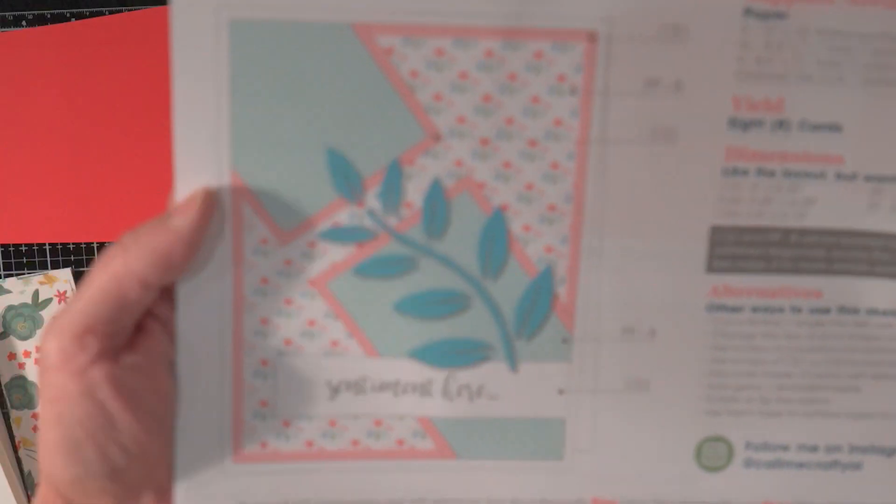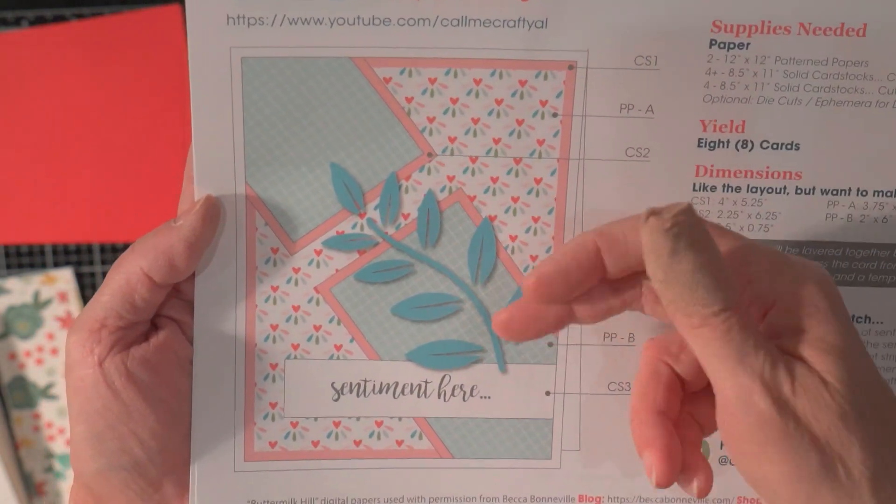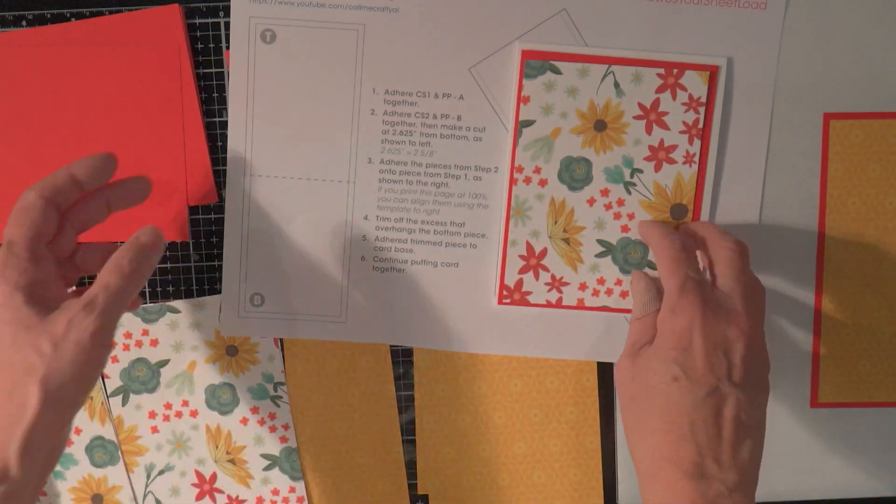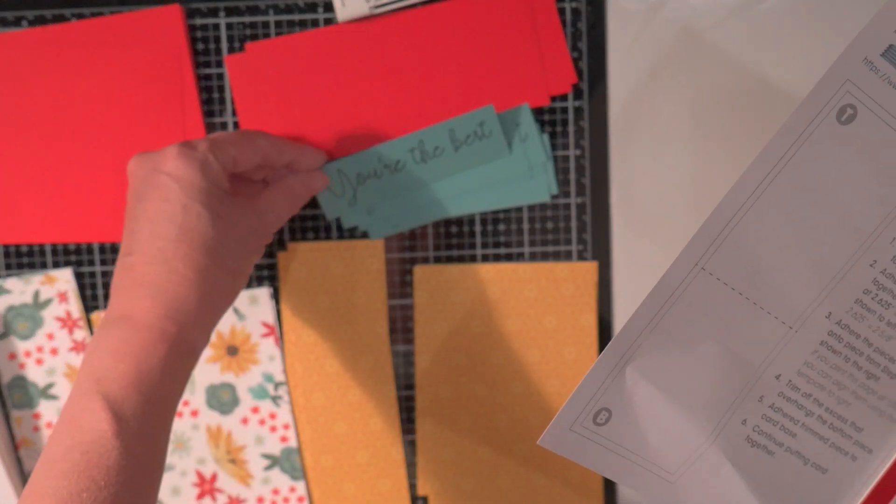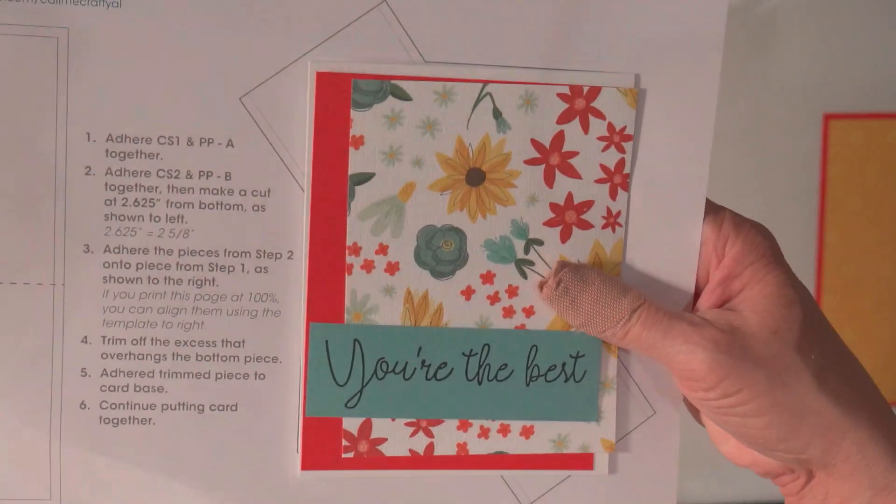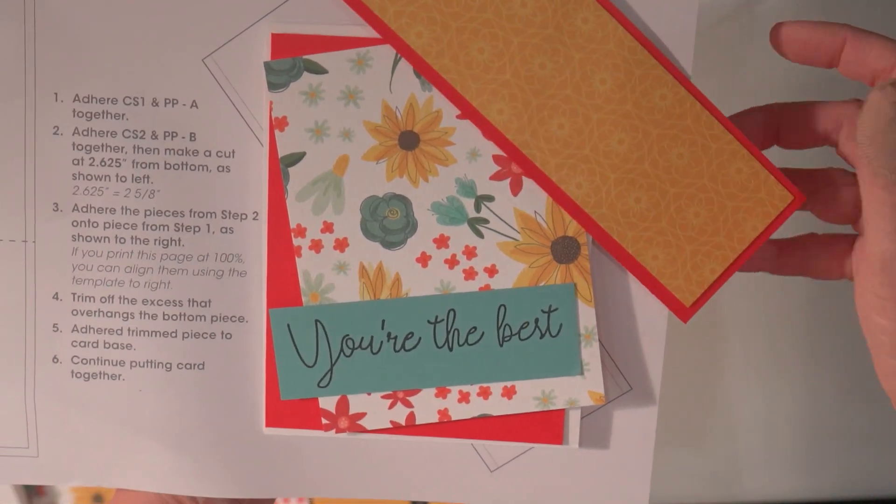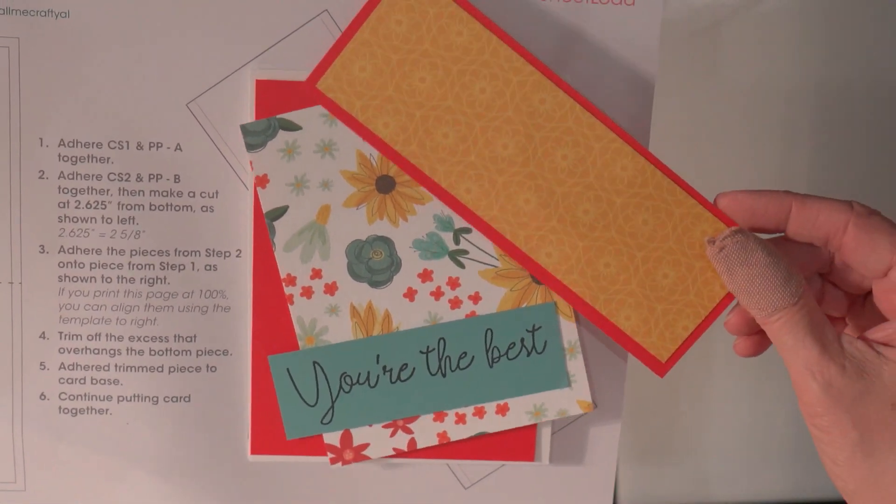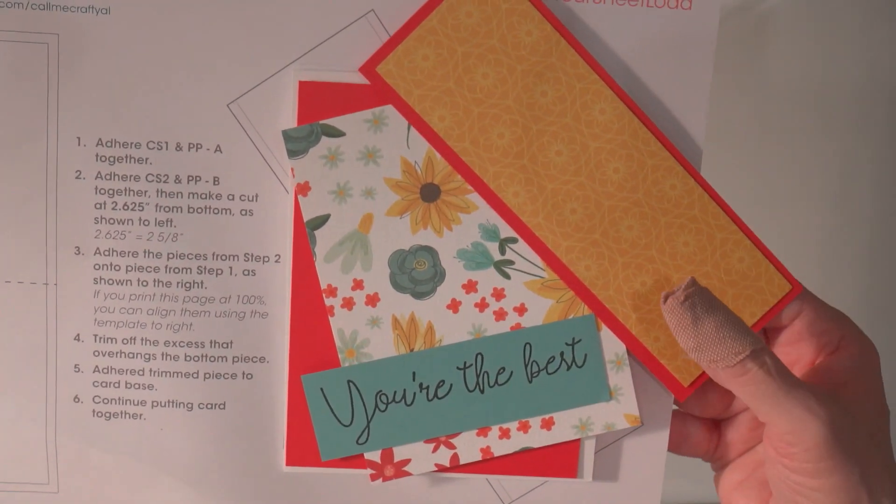And then in the end it'll look like this. And then she gives a little idea here of adding some type of embellishment. And then of course I've got my sentiment strip that's going to go across the bottom there. So I love the colors of these papers. I love the flowers and I love the yellow. And then I think these all coordinate. So let me get a couple of them glued together and show you what they look like.